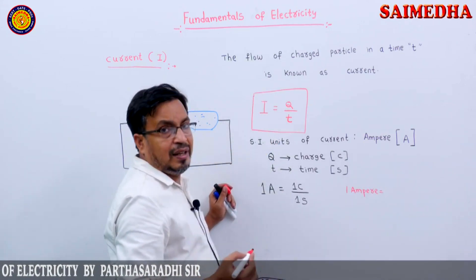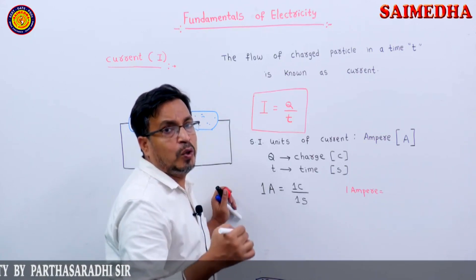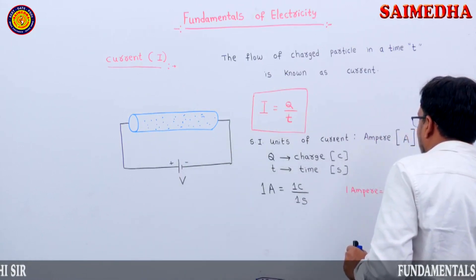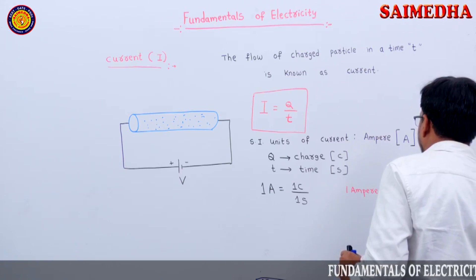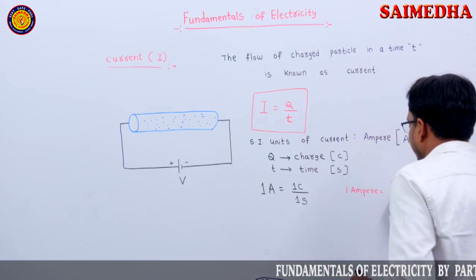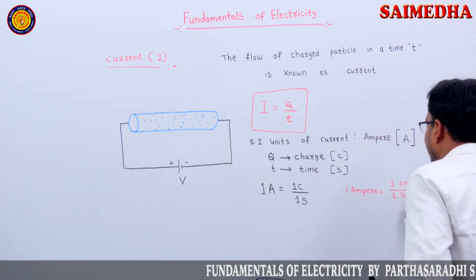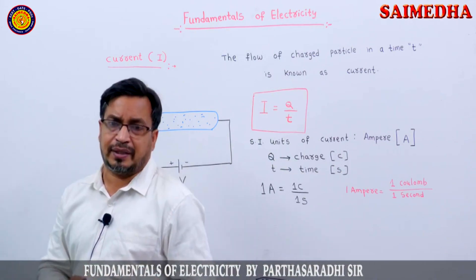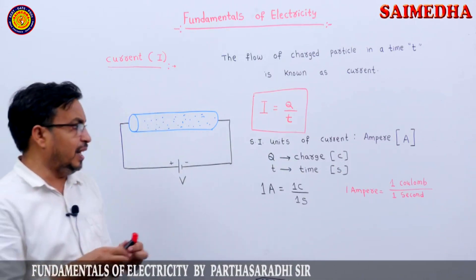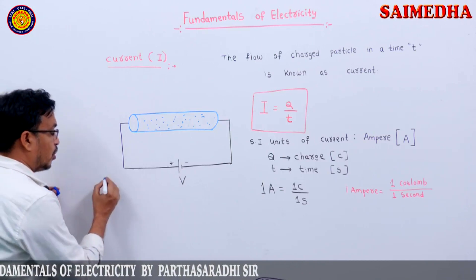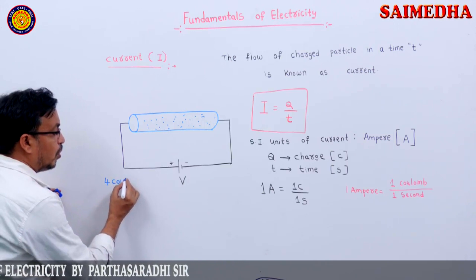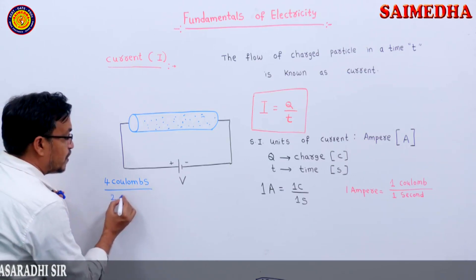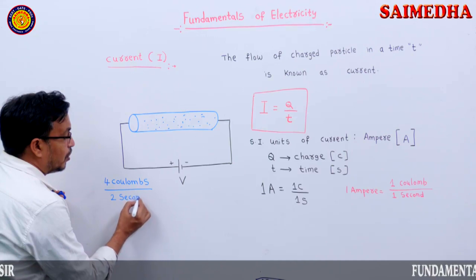One ampere is equal to one coulomb by one second. Example: four coulombs by two seconds is equal to dash.